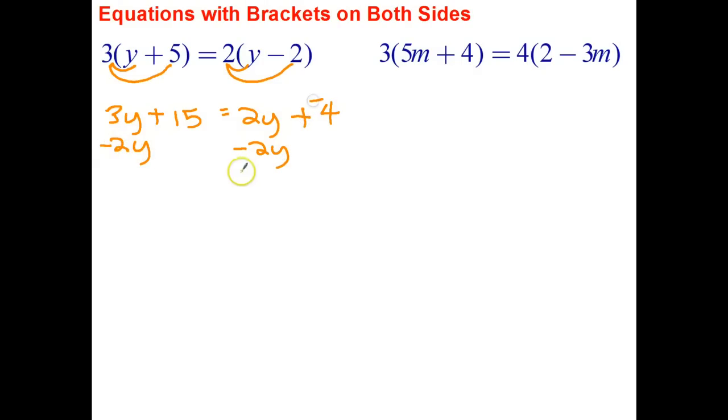So the easiest way to do that is to subtract 2y from both sides. In fact, I will change that to plus negative. It just turns out in this case, I think it's going to be a bit easier, at least for me. 3y subtract 2y is just 1y or just y plus 15 equals 2y minus 2y cancels out, and that leaves me with negative 4. And the last step is the opposite of adding 15 is taking 15. Those cancel out, and y equals negative 4 subtract 15 is negative 19.